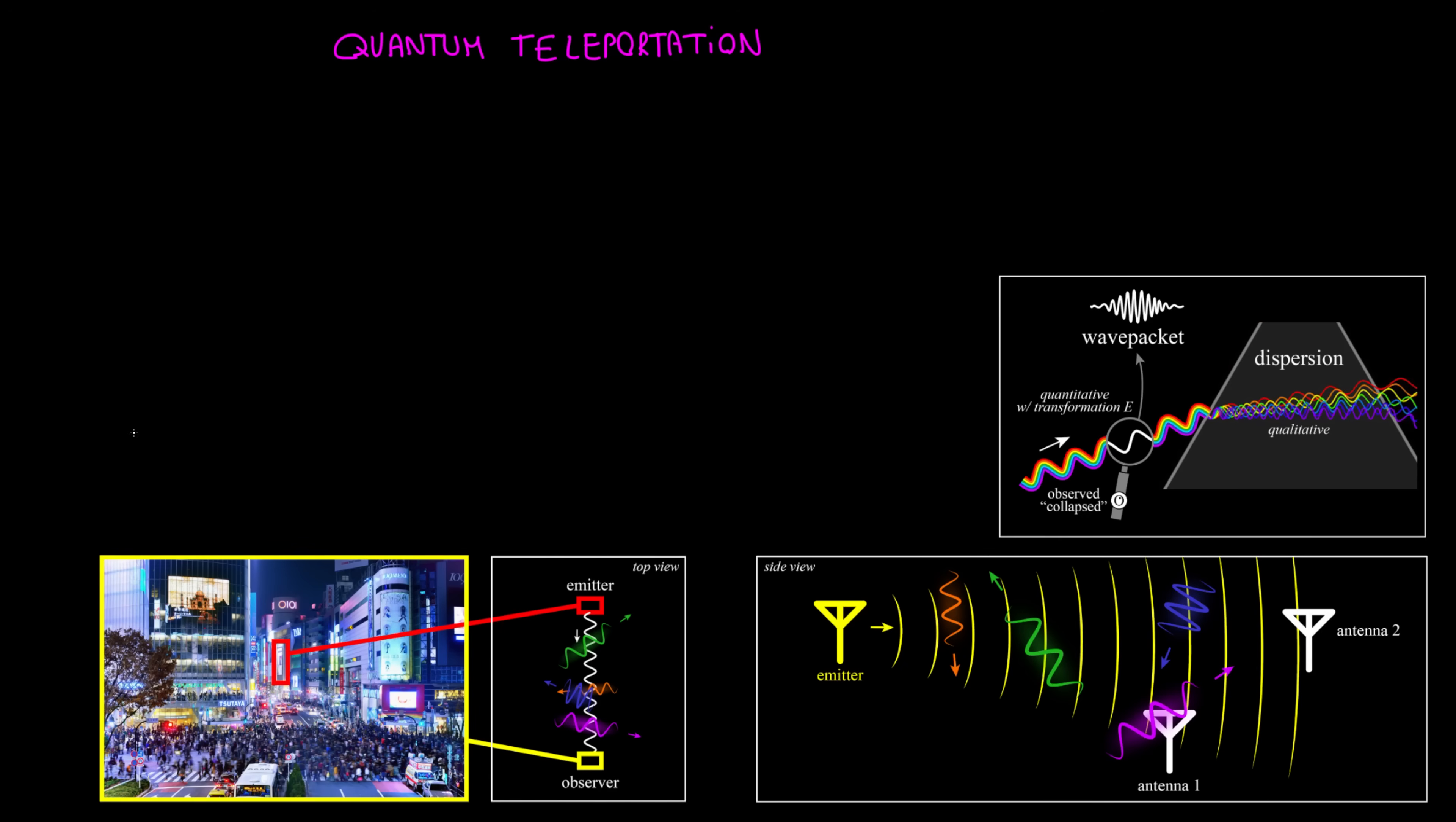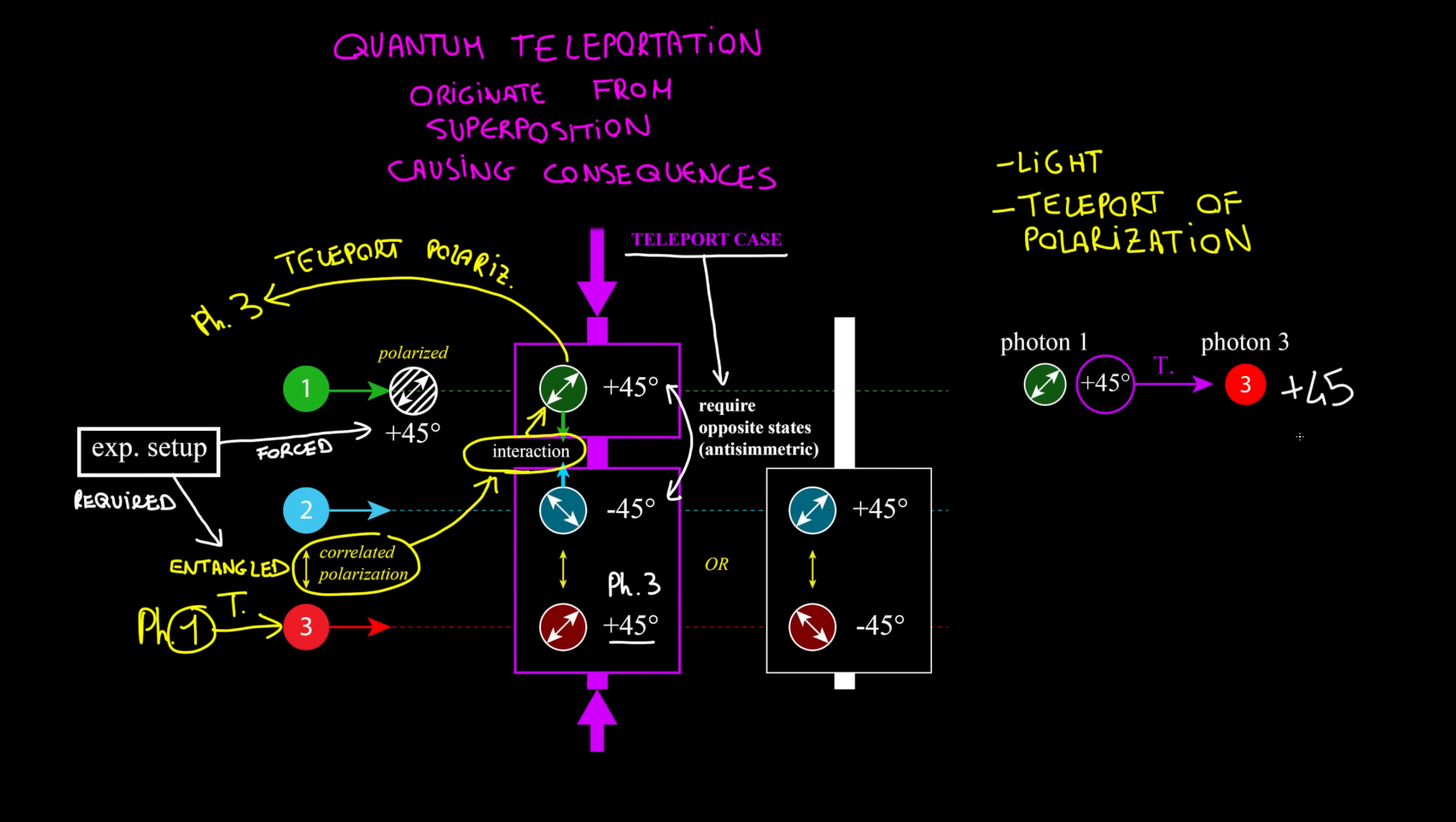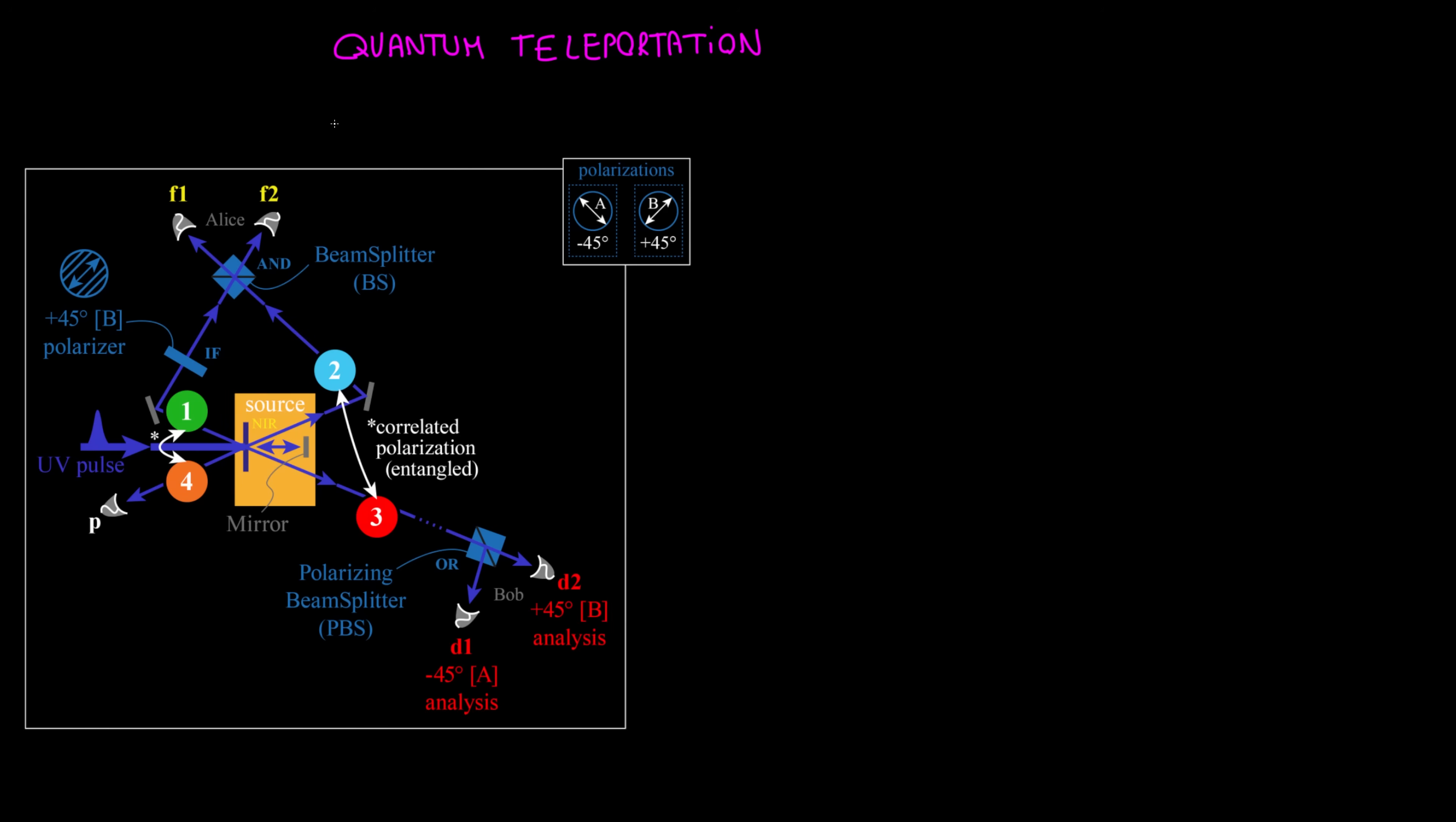We also saw from interferometry that waves cannot interact, while quantum teleportation originates from light pulses affecting each other. If some masochist is interested in going deeper, this is the experimental apparatus. For each UV pulse, two pairs of photons are produced, and this order refers to the drawing.